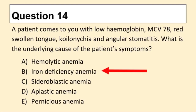Question 14. A patient comes to you with low hemoglobin, MCV of 78, red swollen tongue, koilonychia, and angular stomatitis. What is the underlying cause of the patient's symptoms? The answer is B: iron deficiency anemia.